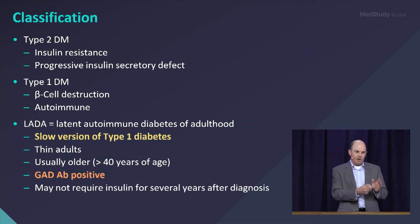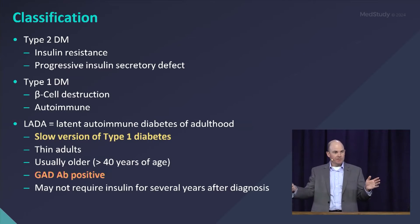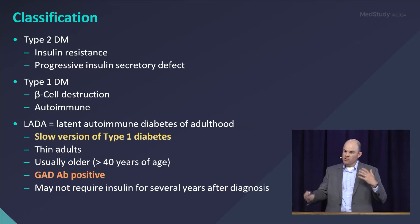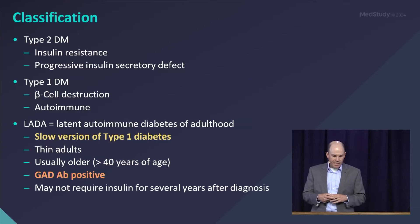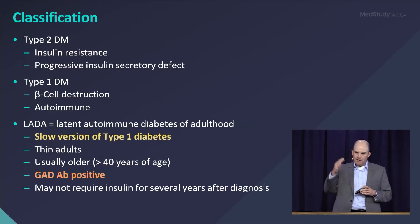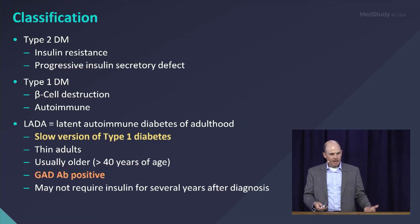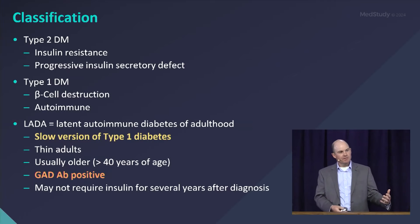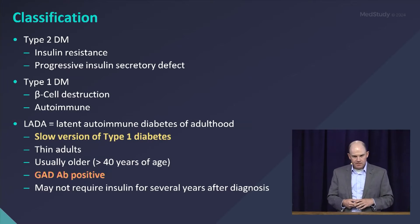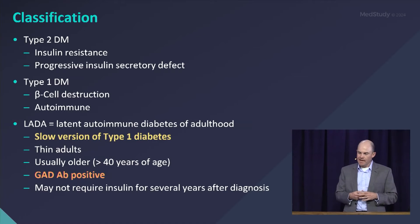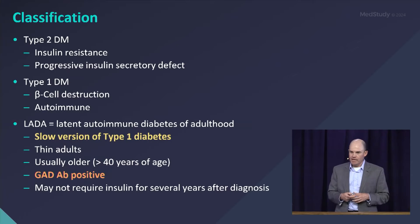Typically, LADA will start out looking like a type 2 diabetic — the patient won't be on insulin, they'll have some hyperglycemia, and they're usually able to maintain with just oral medications or non-insulin therapy. Then over time, their glycemic control gradually worsens. So if you have a patient who doesn't have the characteristic findings of insulin resistance — central obesity, acanthosis, etc. — think about LADA. The diagnosis is made by checking a GAD antibody.